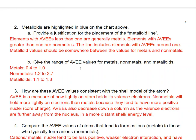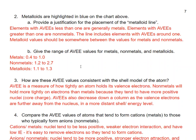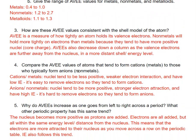How is this consistent with the shell model of the atom? AVEE is a measure of how tightly an atom holds onto its valence electrons. Nonmetals hold more tightly onto their electrons than metals because they tend to have more positive nuclei — they're grouped on the right side of the periodic table, with the most protons in a given row. AVEEs also decrease down a column as the valence electrons are further from the nucleus in a more distant shell or energy level.